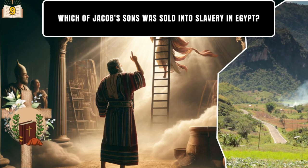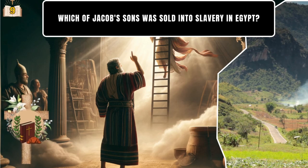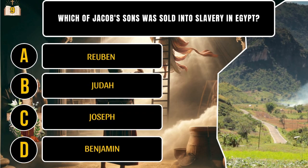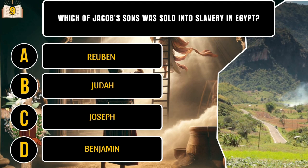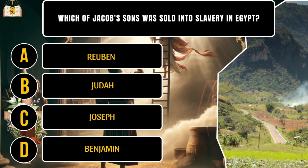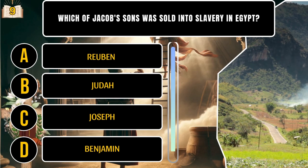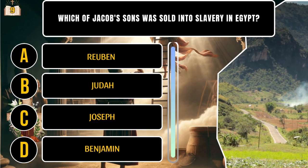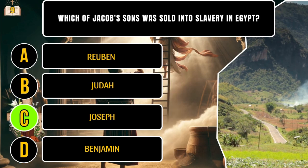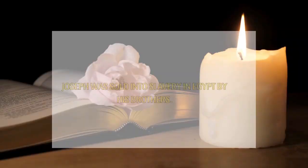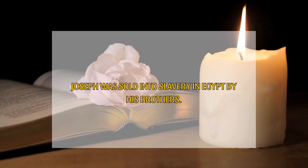Which of Jacob's sons was sold into slavery in Egypt? A. Reuben. B. Judah. C. Joseph. D. Benjamin. That's C. Joseph was sold into slavery in Egypt by his brothers.